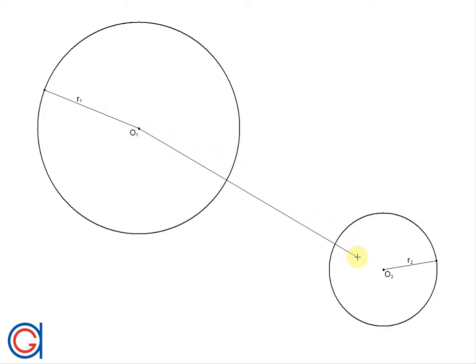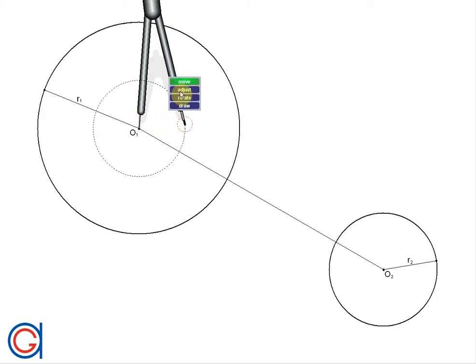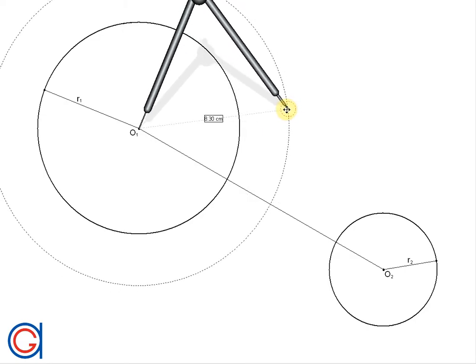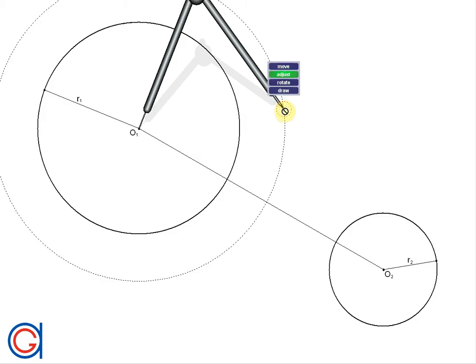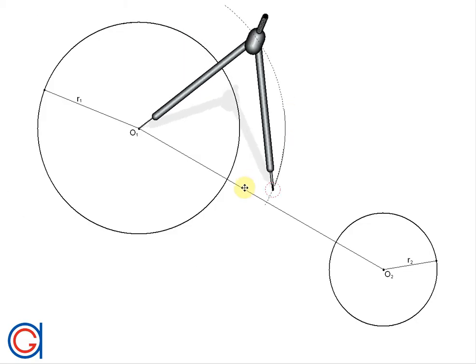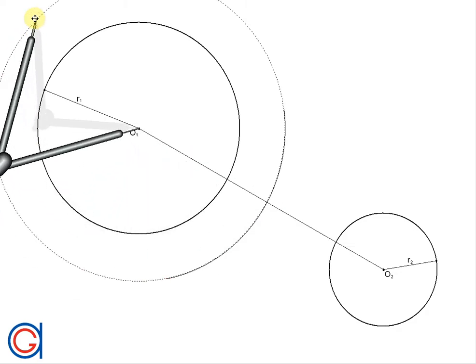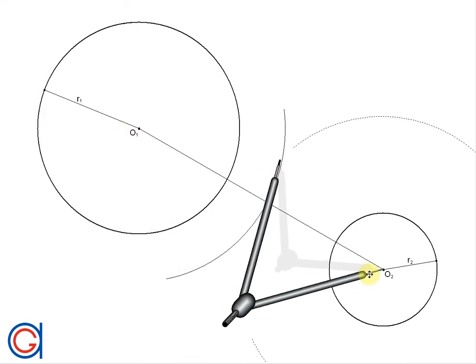So the first step is to join the center points O1 to O2. The next step is to work out the perpendicular bisector of the line O1, O2. To do this we set our compass slightly longer than half the distance and we describe an arc to the right as can be seen here. And now with the same radius and setting our compass on point O2, we describe another arc to the left cutting our previously drawn arc at two points.